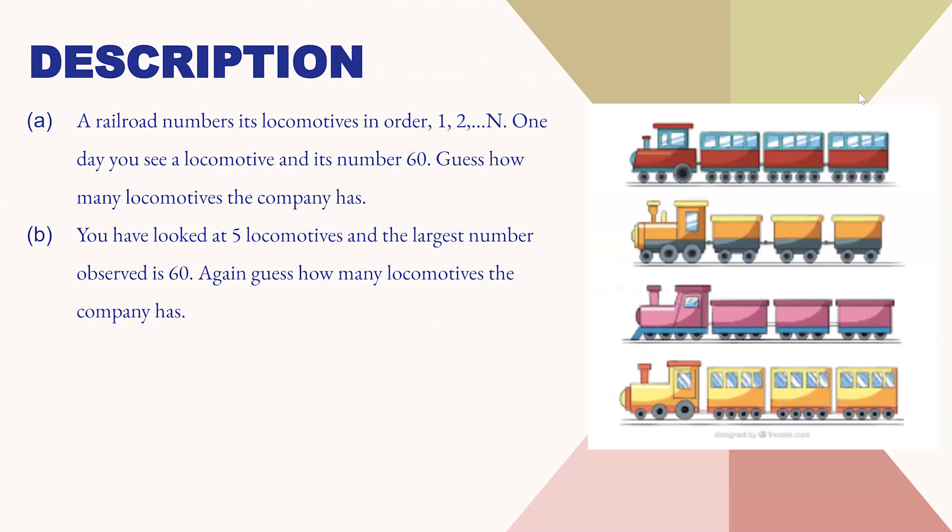In this problem, a railroad has numbered its locomotives from 1 till N. And one day you see a locomotive numbered 60. So now you need to make a guess at how many locomotives the company has.